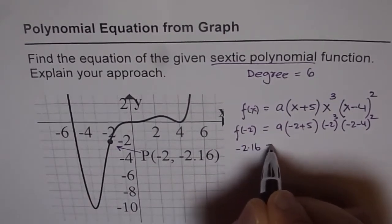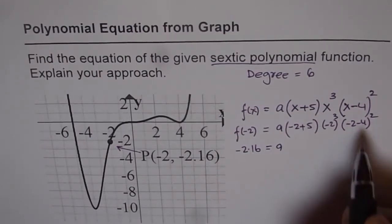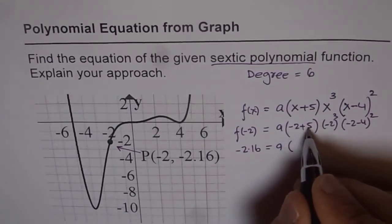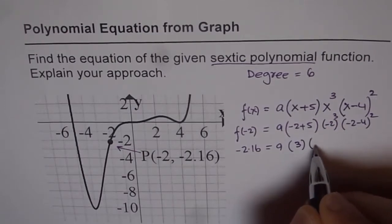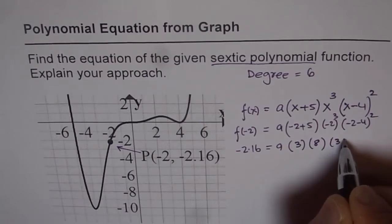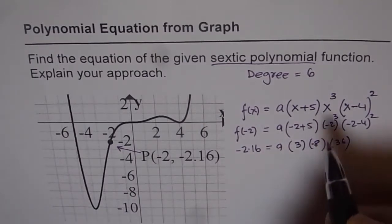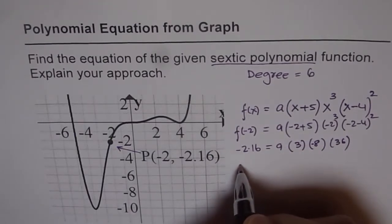So we have minus 2.16 equals a times and we can multiply all this and get a number. So it is minus 2 plus 5 is kind of 3 and minus 2 cube is minus 8 and this is minus 6 square which is 36 right. So well this is minus 8, minus 8 correct. Minus 2 cube is minus 8. So let us multiply these and see what do we get.